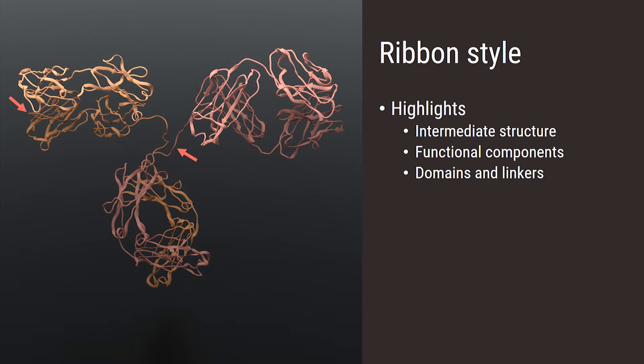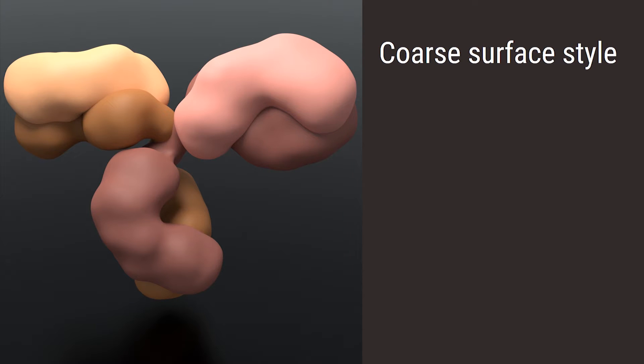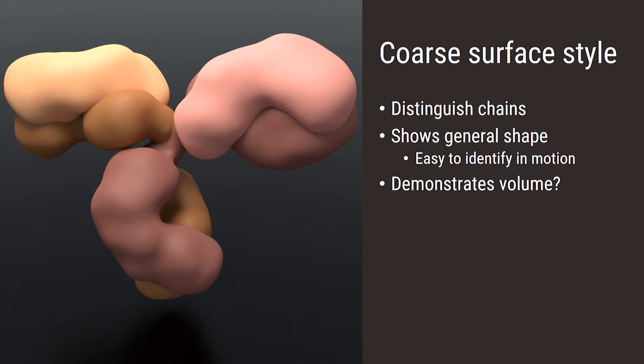So perhaps most commonly we have surface representations, which can differentiate components of a protein complex and convey the overall shape, especially in motion in a 3D animation. And the volume is now clear. But volume raises an important question because a surface mesh can either be a coarse approximation like this or tightly adhere to atom positions.